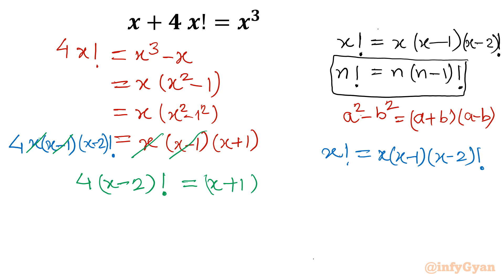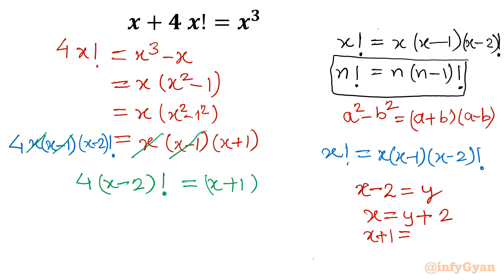Now I am going to substitute x−2 = y. Once I put x−2 = y, then x becomes y+2. Since x+1 is on the right hand side, x+1 becomes y+3. So our equation converts into 4·y! = y+3.